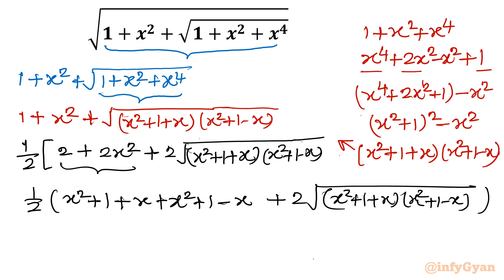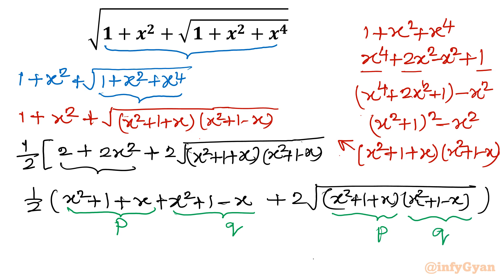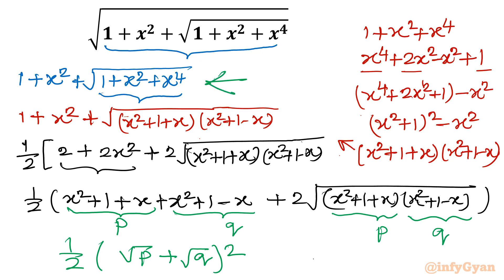Now I will apply a substitution. Consider P equals x square plus 1 plus x, and Q equals x square plus 1 minus x. So the expression inside becomes P plus Q plus 2 times root of PQ. This matches the identity: P plus Q plus 2 times root of PQ equals (root P plus root Q) whole square. I will put these values into the original radical expression.